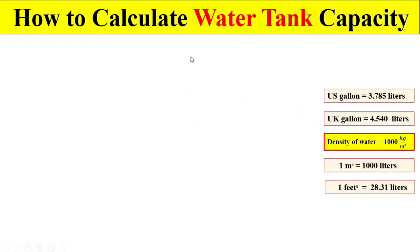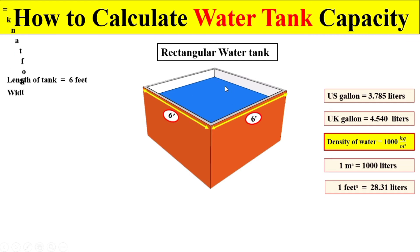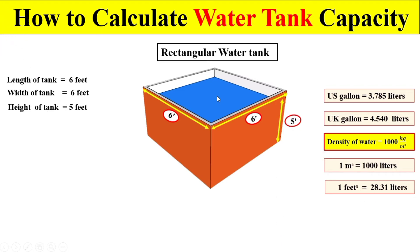Now let's come to our today's topic — how we can calculate water tank capacity. Let's suppose the length of the tank is 6 feet, the width of the tank is 6 feet, and the height of the tank is 5 feet.